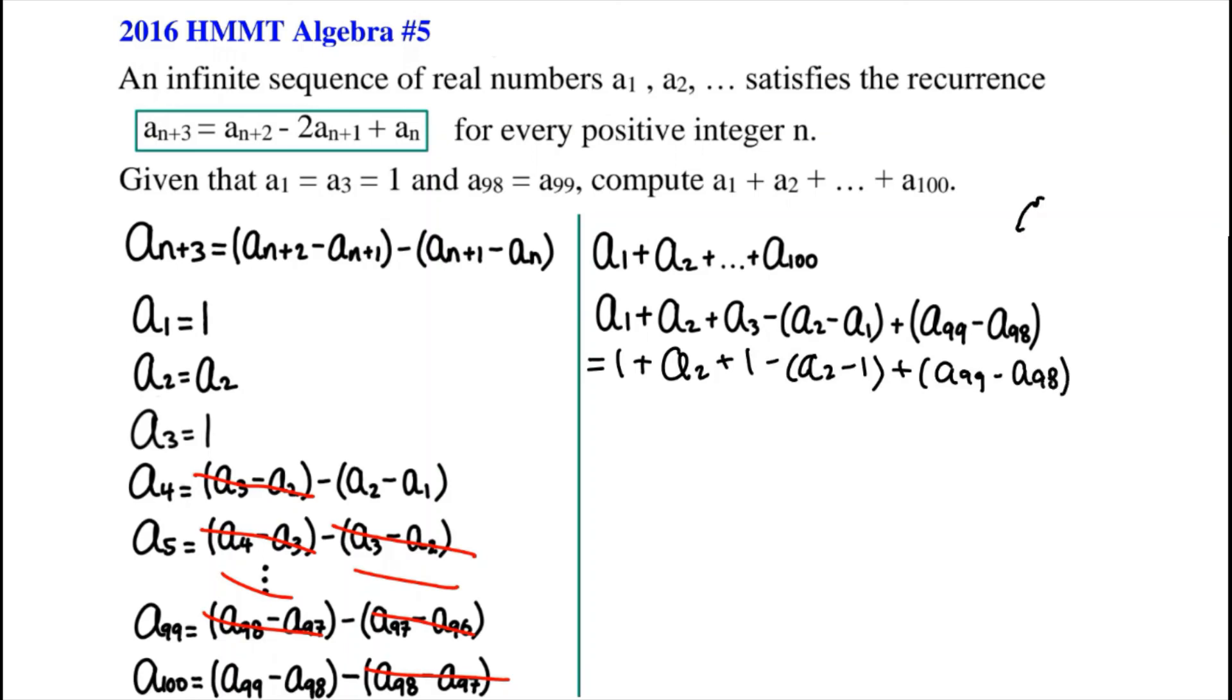Now, oops, sorry, you'll notice that we can get rid of the a2 because this is minus and this is a positive. So let's get rid of that which is really convenient because we don't know the value of it. We can also get rid of a99 minus a98 because it says so here that they're the same thing. So we can just get rid of that too. With canceling those, we get that a1 plus a2 all the way to a100 equals 3. And there we go, that's our answer.